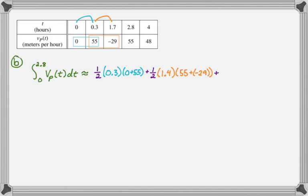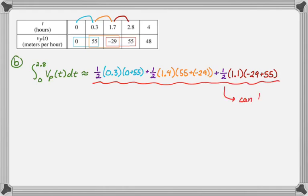And then we're gonna do it one more time: plus one half, from 1.7 to 2.8, so that's 1.1, and then we add up these bases: negative 29 plus 55. Technically you can leave this because you don't have to simplify, but it turns out in this calculator problem you need to use this value later.